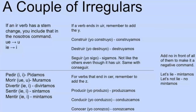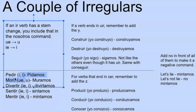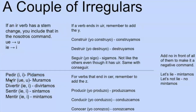Here are some irregular verbs to look out for. If an IR verb specifically has a stem change, you include that in the nosotros command form. A 'u→ue' stem change becomes 'u,' and 'e→ie' becomes 'i.' For example, 'pedir' has an 'i' in the preterite, which makes it 'pidamos.' Without the stem change it'd just be 'pedamos,' but with it, 'pidamos.' 'Morir' gets a U, so 'muramos.' 'Divertir' becomes 'divirtamos.' 'Sentir' becomes 'sintamos.' 'Mentir' becomes 'mintamos.' This is more advanced content, just good to know.